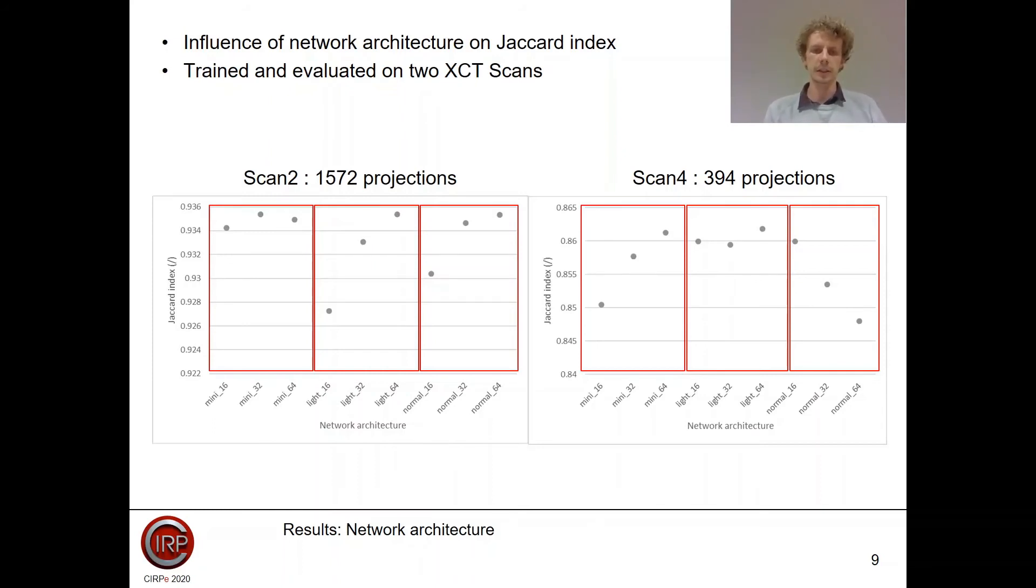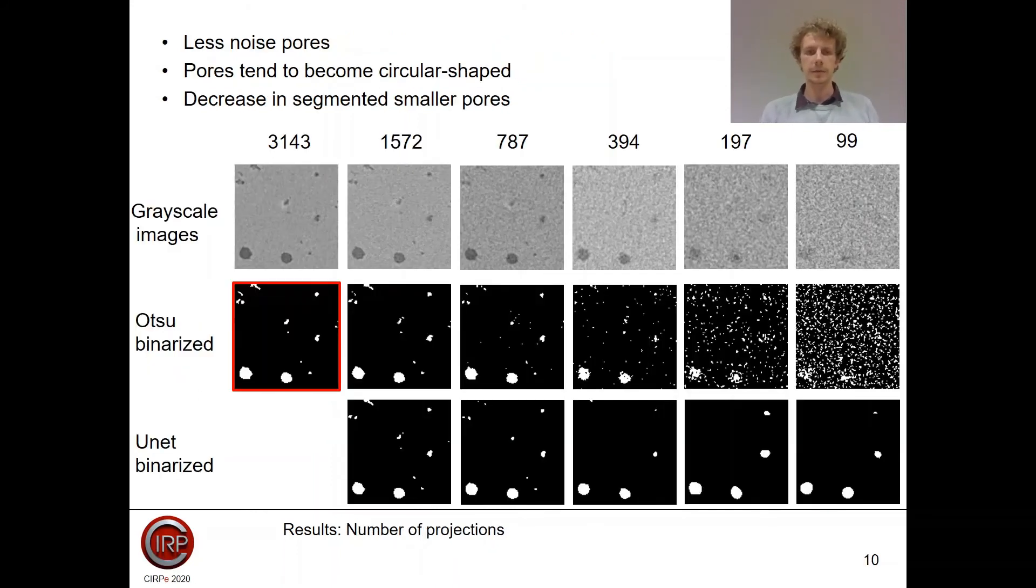From these results, we chose the light network architecture with 46 convolutional layers as the optimal network because it had two times the highest Jaccard index value and it takes the benefit of increasing the number of filters increases the quality of the segmentation. We trained this network on all the different scans ranging from scans with 1,500 to 99 projections.